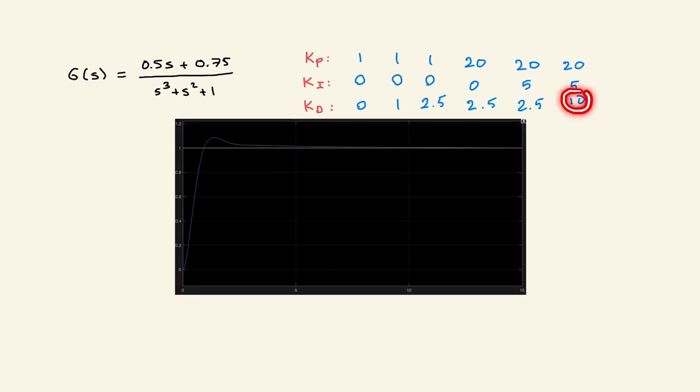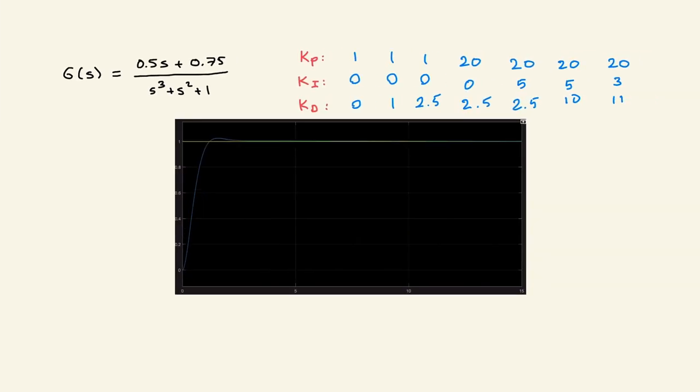When you increase Kd you have a little bit overshoot but you pretty much killed all the oscillations. Let's now fine tune. If I reduced Ki a little bit to 2 to get rid of this a little bit overshoot, and increased Kd a little bit more, to have this nice smooth response that perfectly tracks the command, this is a very nice acceptable system performance.